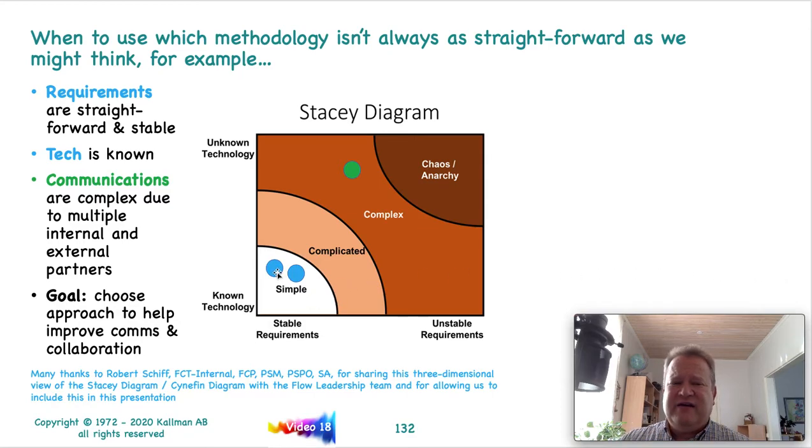Now, a lot of times you'll say the technology is simple and the requirements are known. But if you end up with complex communications, so it becomes almost a 3D, three-dimensional graph. If your communications are complex due to either multiple internal or external partners, now all of a sudden you need to start looking at the Stacey diagram in a new way. Because it's not as straightforward or as simple as you think. Because a lot of times the Agilists will say if it's complex or complicated, then we need to be using Agile for these and even for chaos and anarchy. But if it's simple, you can use waterfall or a napkin or whatever you want to do to track your work. But the reality is that it gets a lot more complicated than that.